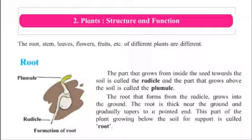Plants: structure and function. What helps us to easily identify the plants around us? The various parts of plants — roots, stems, leaves, flowers, fruits, etc. — are different across different plants. We can identify plants with the help of these different characteristics. Let us now acquaint ourselves with these plant organs in greater detail.